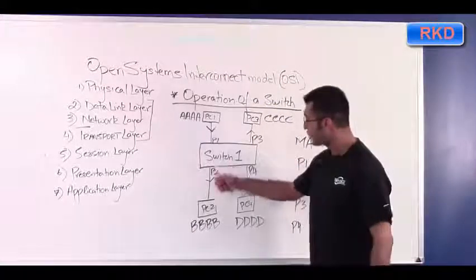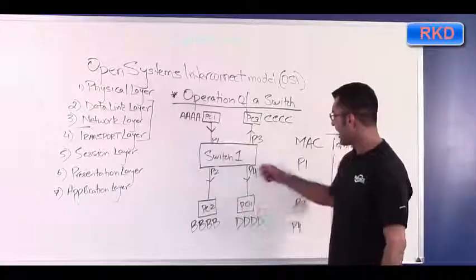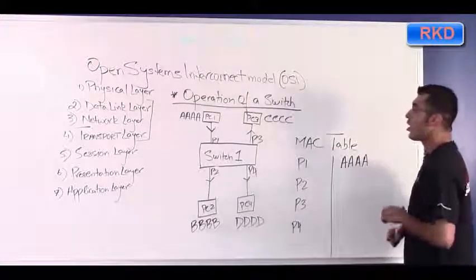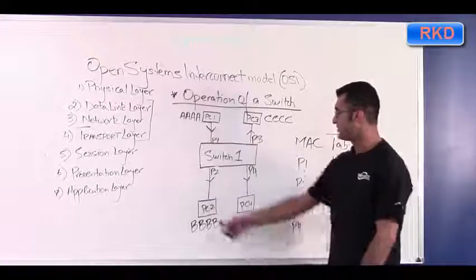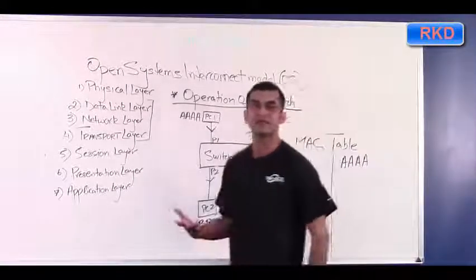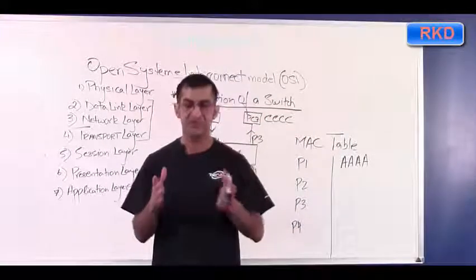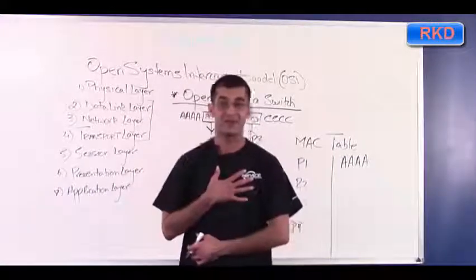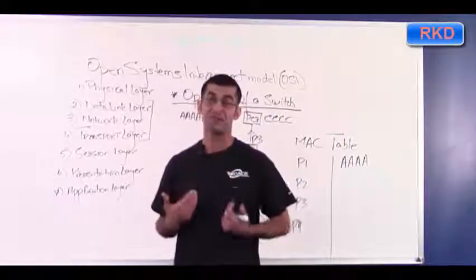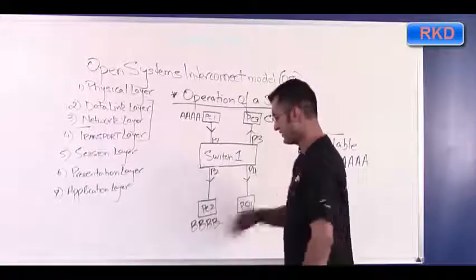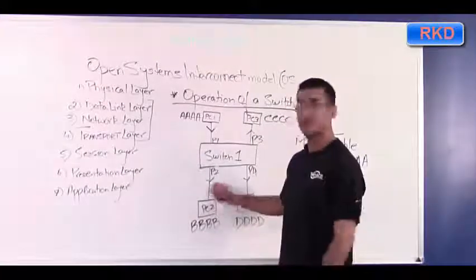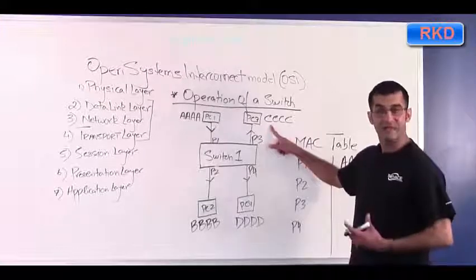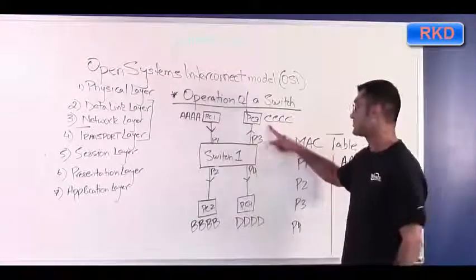All devices receive the frame. PC2 looks at the destination MAC address field — DDDD — and compares it with its own MAC, BBBB. They don't match, so PC2 drops the frame. PC3 does the same: DDDD doesn't match CCCC, so PC3 drops it. In PC4's case, the destination MAC address DDDD matches PC4's own MAC, so PC4 accepts the frame.